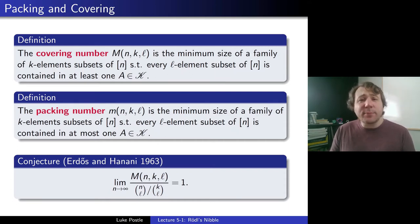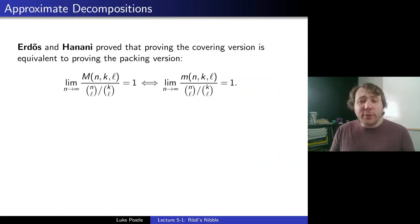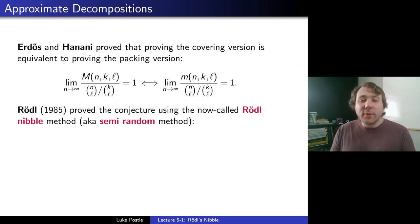So that's the Erdős and Hanani conjecture. They were saying, let's back off trying to prove the design conjecture and just try to prove it asymptotically. And there, it maybe makes sense that probabilistic techniques would be useful. And indeed, they had actually shown and they proved that the covering version is equivalent to proving the packing version. And that problem stayed open for almost 20 years until Rödel in 1985 proved the conjecture, the Erdős and Hanani conjecture, this asymptotic version of the design conjecture, using what is now called the Rödel-Nibble method, also known as the semi-random method.